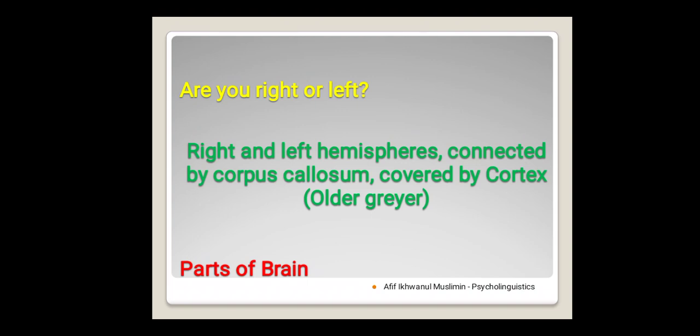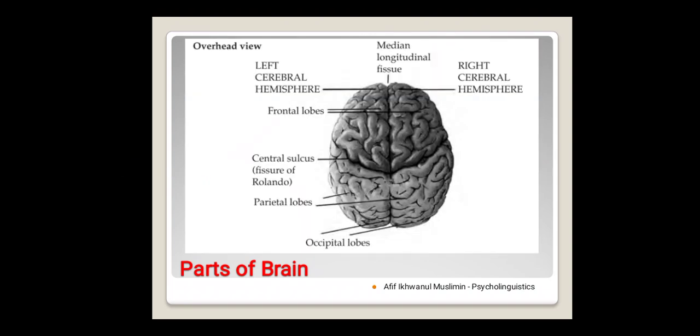So in our brain we have two big parts which are called the right and left hemispheres, and those are connected by what is called the corpus callosum. The big part of the brain is covered with a tissue which is called the cortex. And you know, at the early age the color is pink and then it grows older into a grayer color.